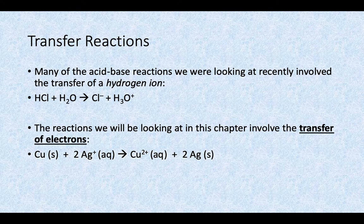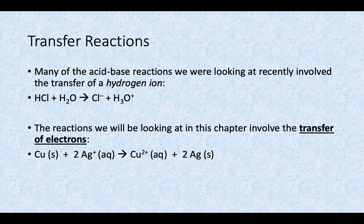What we're going to be looking at in this chapter is a different kind of transfer — the transfer of electrons. In the example provided, you would take a piece of solid copper, put it into a solution containing some silver ions, and those two substances react with one another. On the product side, the copper turns into a solution, and the silver starts plating out as a solid instead.